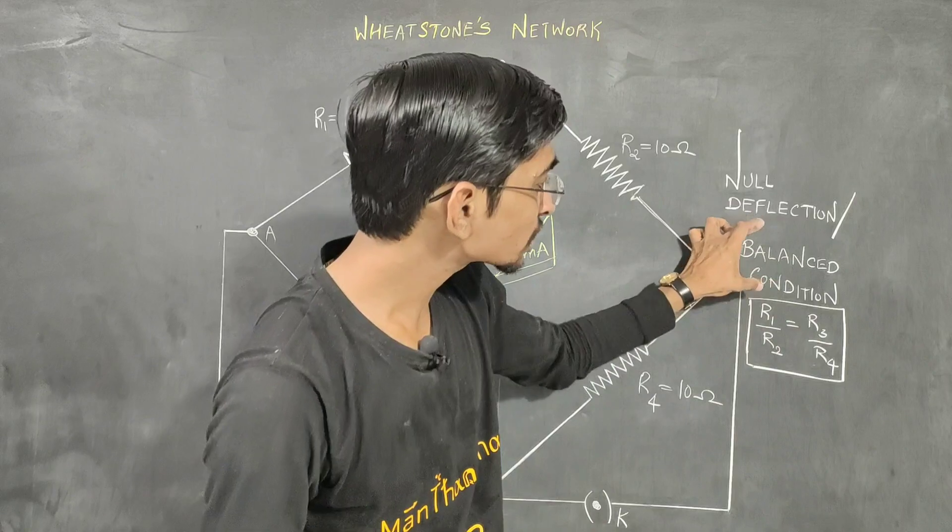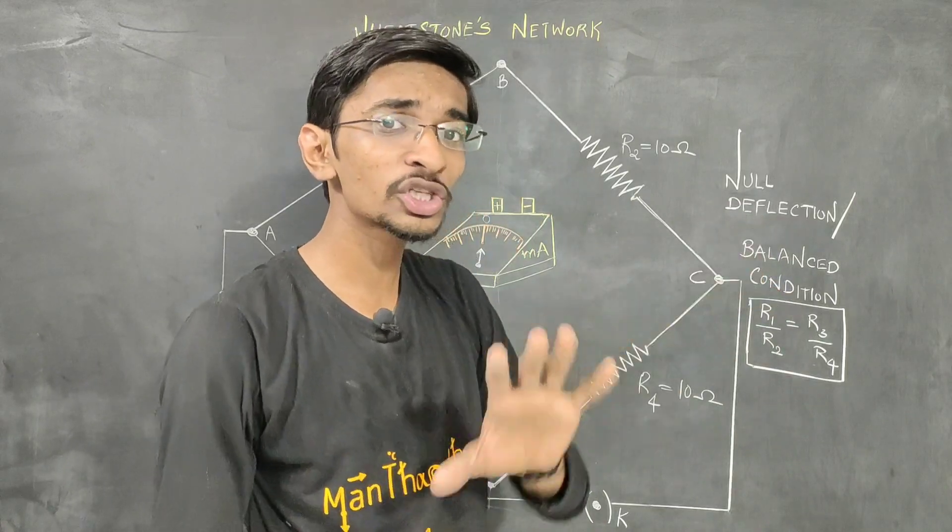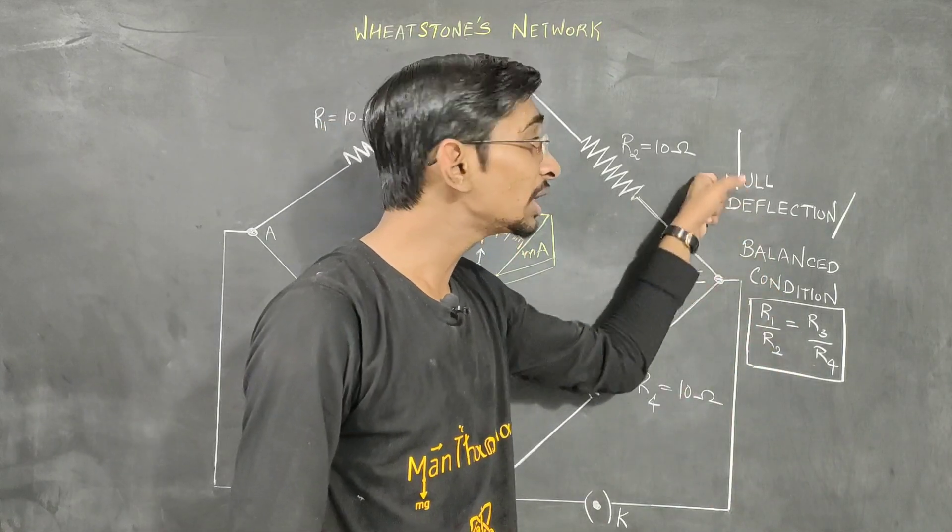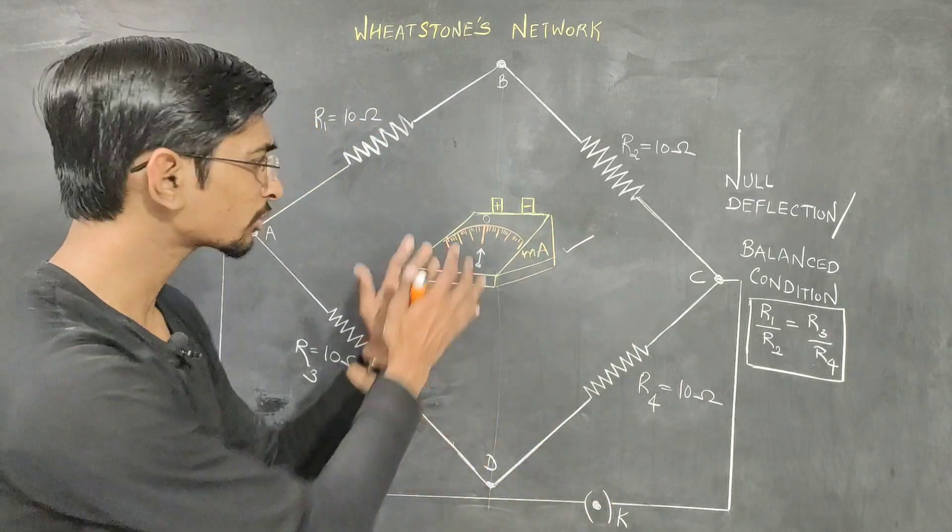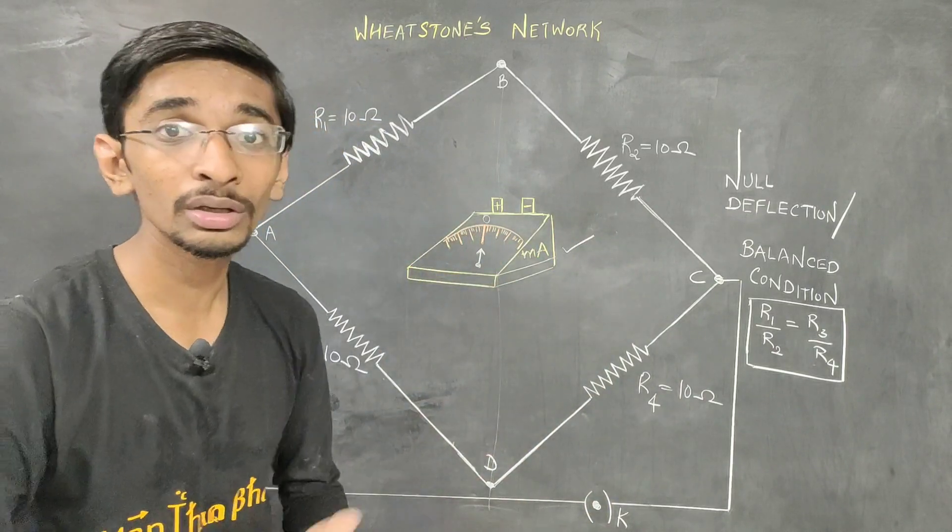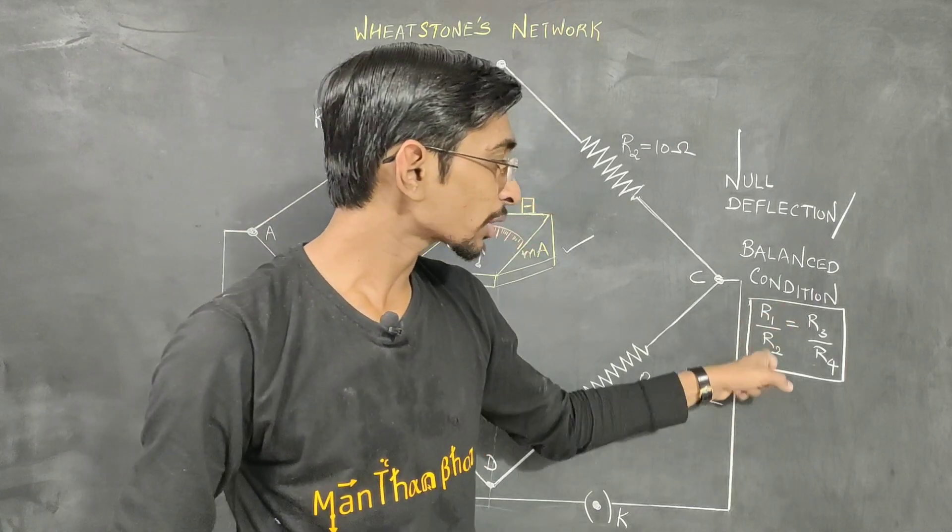equals to R3 by R4, which is known as balanced condition for Whitestone bridge, then null deflection will be there in the galvanometer, whatever is attached here to measure the current. So this is very important: R1 by